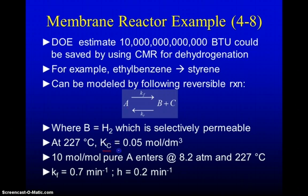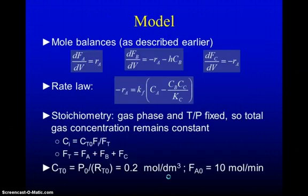We have a particular equilibrium coefficient. Notice it's not very large so this is a very reversible reaction at 227 degrees Celsius which is the temperature we want to operate this reactor. We have 10 moles per minute of pure A entering at 8.2 atmospheres. At 227 degrees Celsius the forward rate coefficient is given and the permeation coefficient H is given.